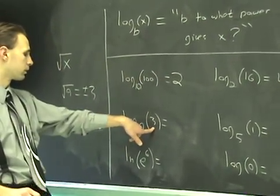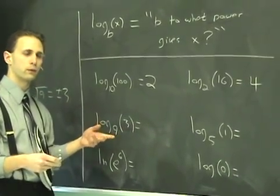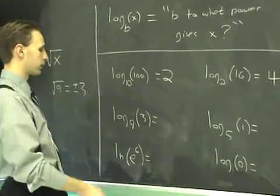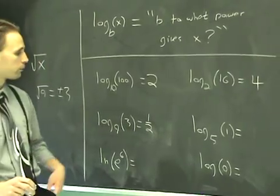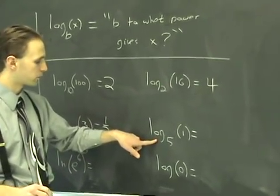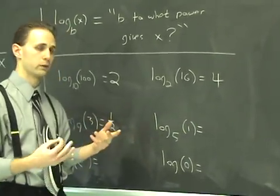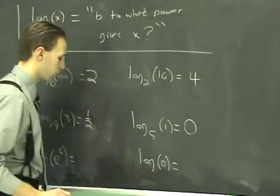Log base 9 of 3. The number is smaller, but you can still raise 9 to some power and get 3 out. If you take the square root of 9, you will get 3. So if you raise it to the 1 half power, you will get 3. This over here, log base 5 of 1. 5 to what power gives 1? Well, anything to the 0 power is 1, so log base 5 of 1 is going to be 0.